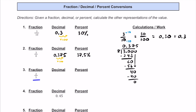Next, we have this fraction of 2 fifths. This one's actually a pretty nice one. We can take this 2 fifths and get it out of 10. So we multiply top and bottom by 2. 2 times 2 is 4, 5 times 2 is 10. So this is 4 tenths, which is going to be 0.4.